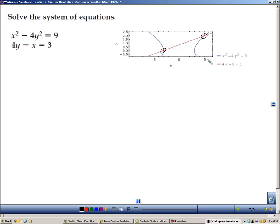Now how do I find those two solutions? I'm going to use algebra. I'm going to take this bottom equation and I'm going to solve it for x. So I'm going to subtract 4y from both sides, negative x equals 3 minus 4y, and then I'm going to divide by negative 1 to get x equals 4y minus 3.